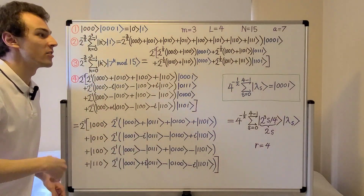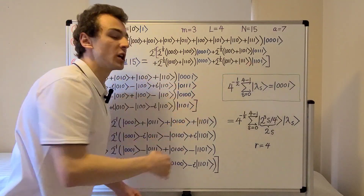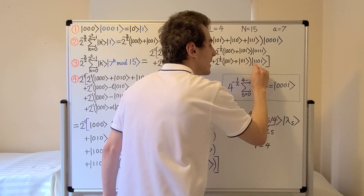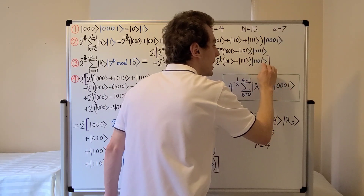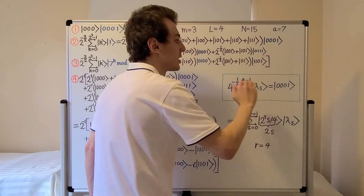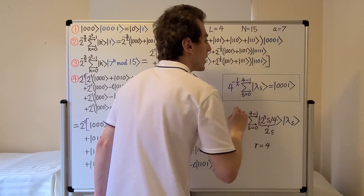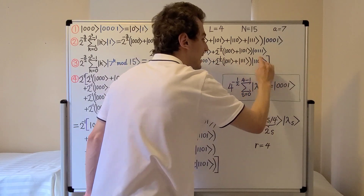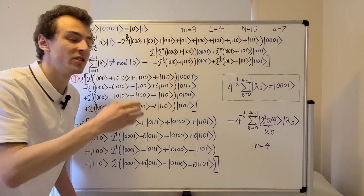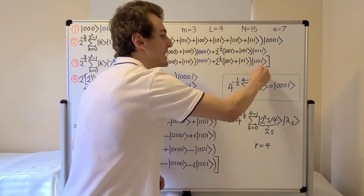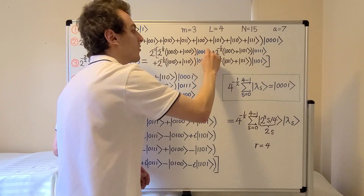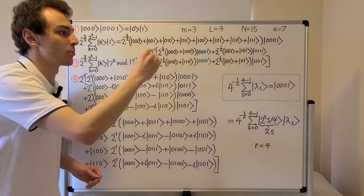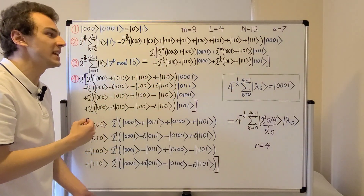Then seven cubed, or seven to the power of three mod 15, is 13, which can be written as one one zero one — that is eight plus four plus one, with no two. So we only have a cycle of these four values: 1, 7, 4, 13. This is because 13 is the multiplicative inverse of 7 mod 15, so if we multiply by 7 again we get back to one. We have four values which we are cycling through because the order of 7 mod 15 is equal to 4.